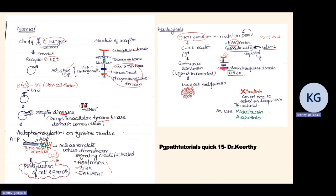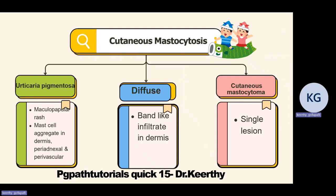For CD117-positive cases, targeted therapy with imatinib is available. However, imatinib will not work here because the D816V mutation occurs at imatinib's binding site — it cannot bind to the mutated site. That is why drugs like midostaurin and avapritinib are given instead.